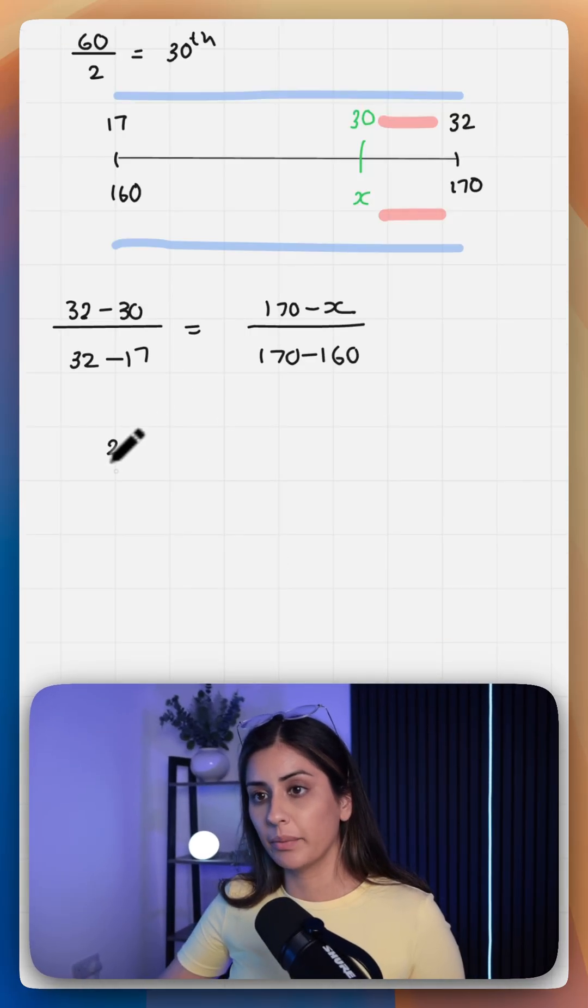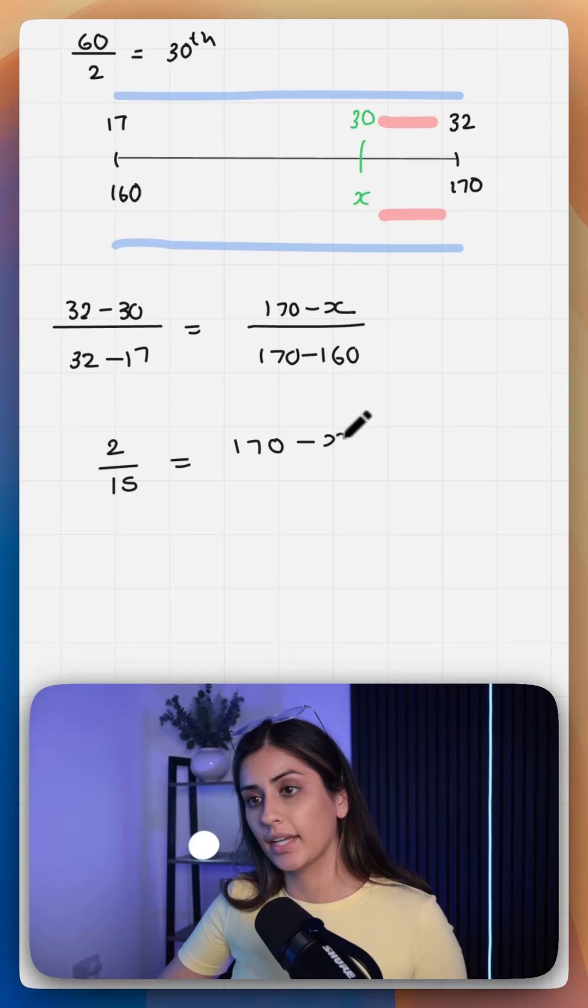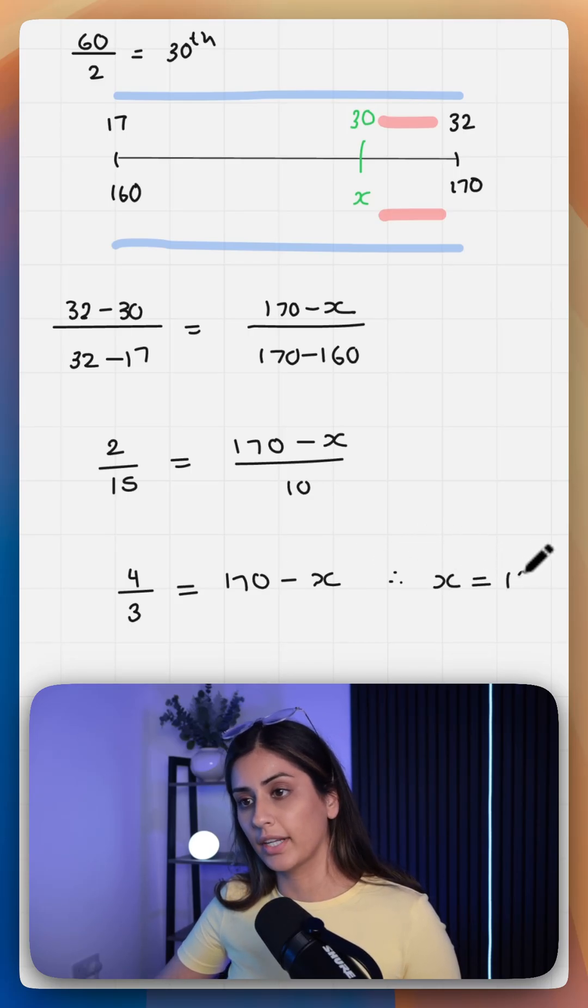Let's rearrange this. So we've got 2 over 15 is equal to 170 minus x over 10. If we take the 10 over, we've got 4 over 3. x rounds up to about 169.